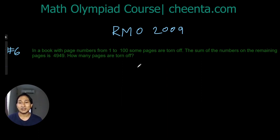The problem says there is a book which has page numbers from 1 to 100. Some pages are thrown off. The sum of the remaining numbers is 4949. How many pages were thrown off?